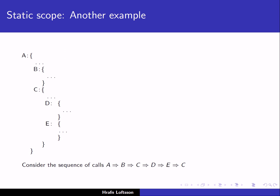Let's look at another example. We have many blocks: block A, block B which is nested inside A, block C which is also nested inside A, and then blocks D and E, both of which are nested inside block C. If we consider the following call sequence: A calls B, B calls C, C calls D, D calls E, and E calls C.